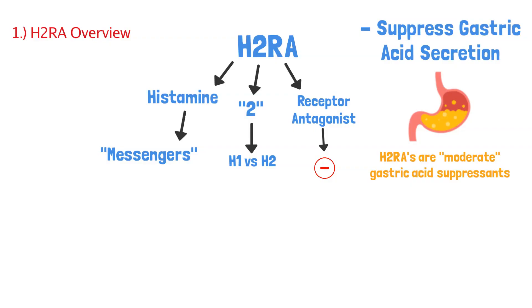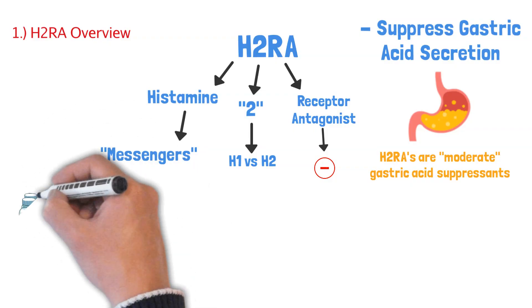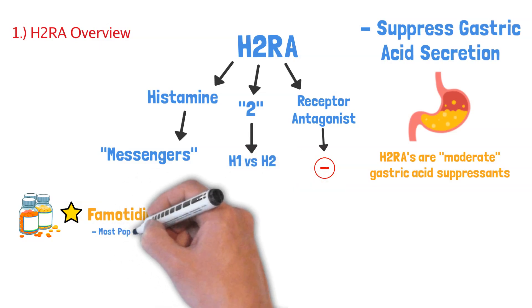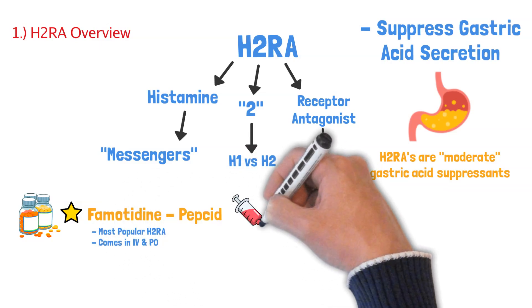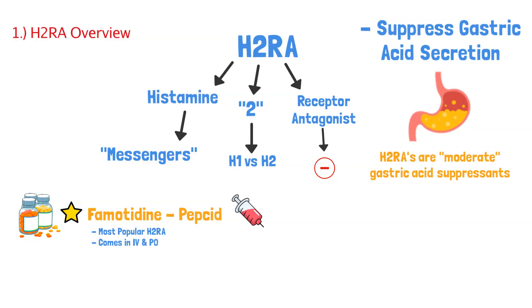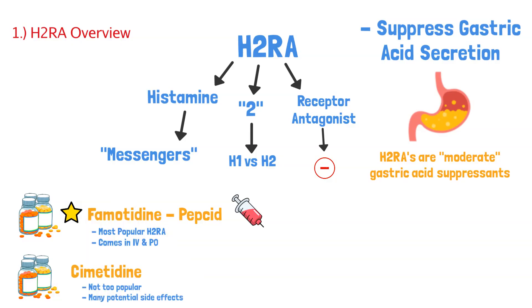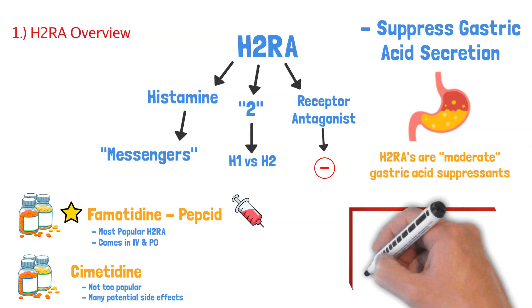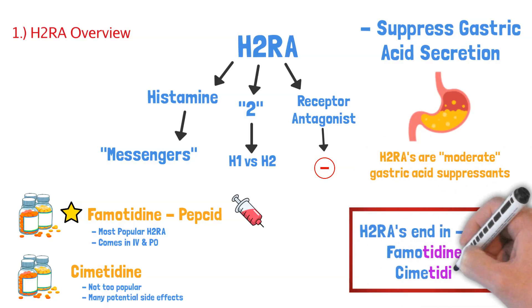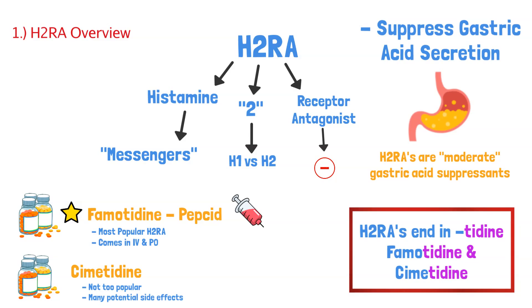Let's talk about a couple of the drugs. The first is famotidine, or Pepcid — by far the most popular H2RA, and it comes in both tablet and IV form. We also have cimetidine, which is the opposite — not popular at all and has a lot of side effects, which we'll discuss later. Notice the ending: famotidine, cimetidine — H2RAs end in '-tidine,' so when you see that ending, you're most likely looking at an H2RA.